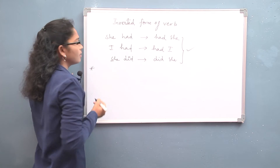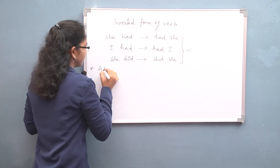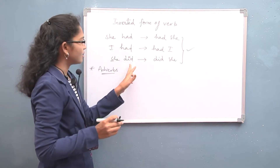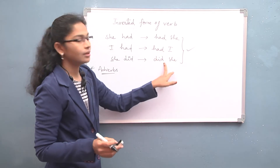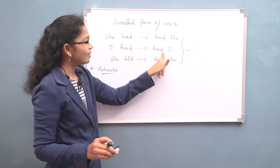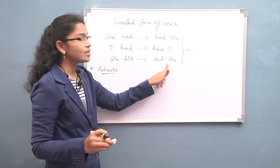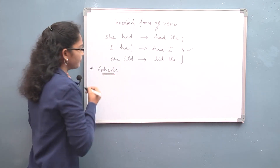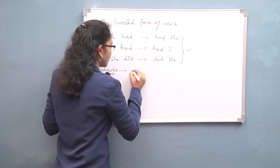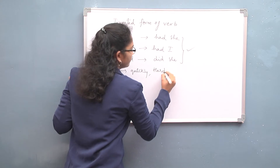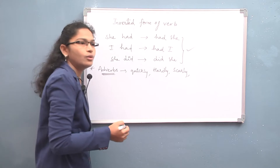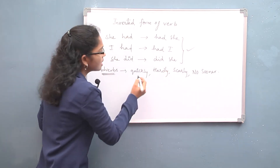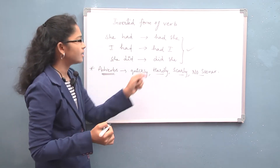Inverted verb forms occur whenever a sentence starts with certain adverbs. These adverbs include: quickly, hardly, scarcely, no sooner. Whenever a sentence starts with these types of words, we get the inverted verb form in that sentence.